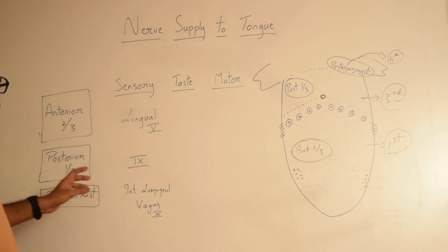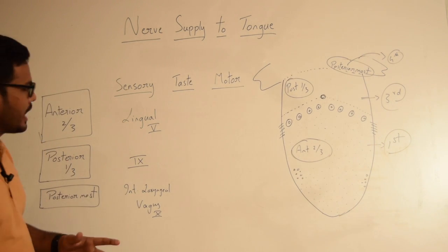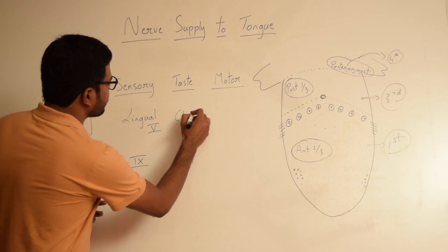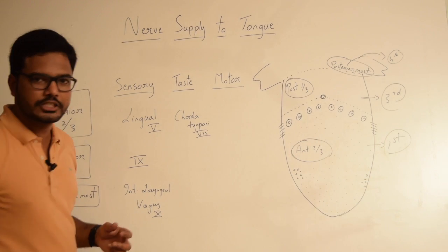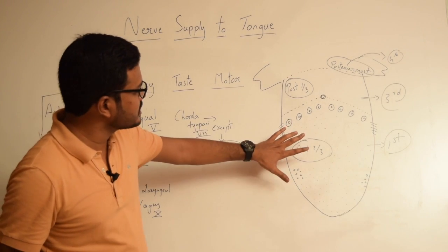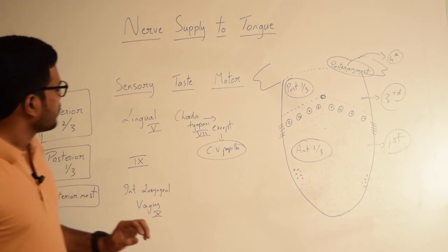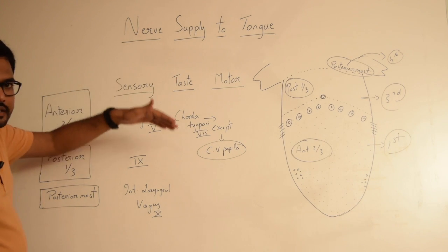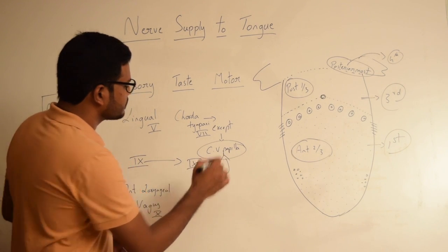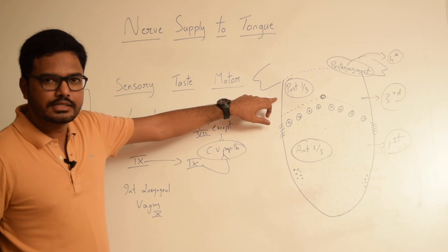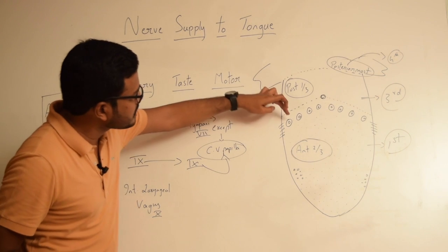Now coming to taste sensations, we have an exception here. For the anterior two-thirds of the tongue, the taste sensation is carried out by the chorda tympani, which is a branch of the facial nerve, except for the circumvallate papillae. For the posterior one-third of the tongue, the taste sensation is carried out by the same glossopharyngeal nerve, including the circumvallate papillae.